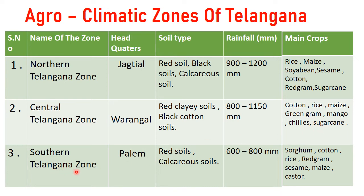Southern Telangana zone headquarters is Palem. Soil types are red soils and calcareous soils. Rainfall ranges from 600-800 mm. Main crops are sorghum, cotton, rice, red gram, sesame, maize, and castor.